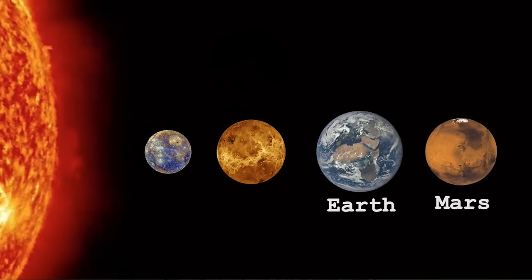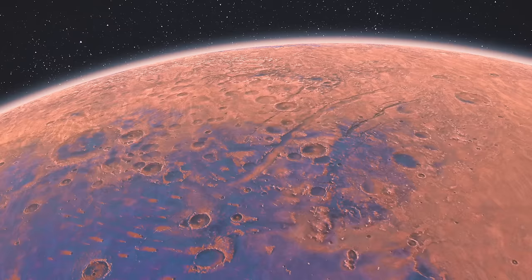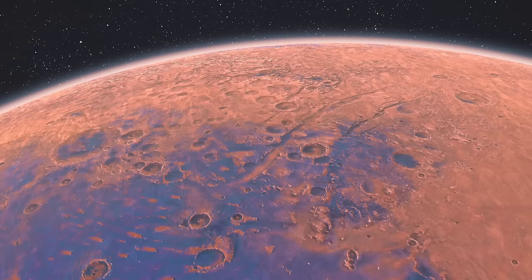Mars is far away from the Sun compared to Earth, and this means Mars would receive less heat from the Sun. The average temperature on Mars is minus 40 degrees centigrade compared to plus 14 degrees on Earth. At this temperature, water would be in frozen state and cannot flow.